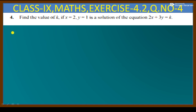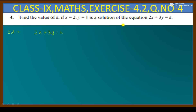Let's see how we solve this. The equation we have is 2x plus 3y is equal to k. It is given that x is equal to 2 and y is equal to 1 is a solution of the equation.